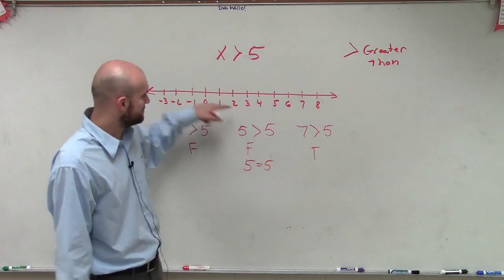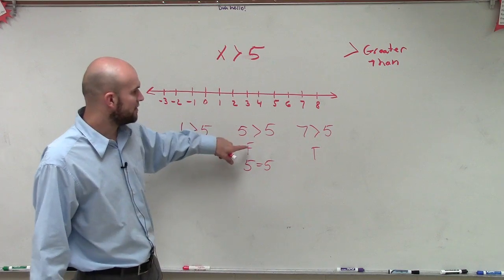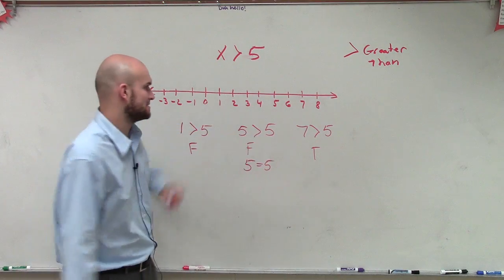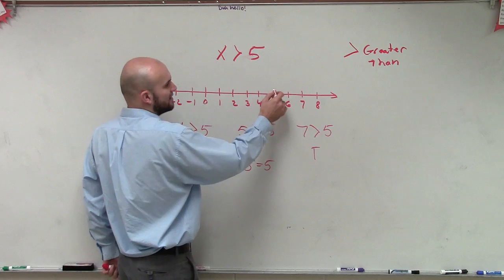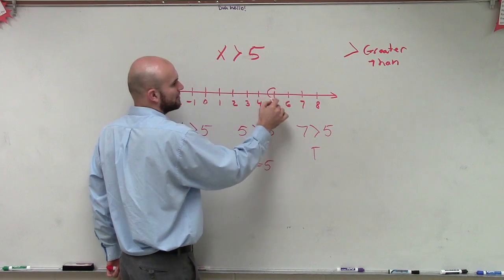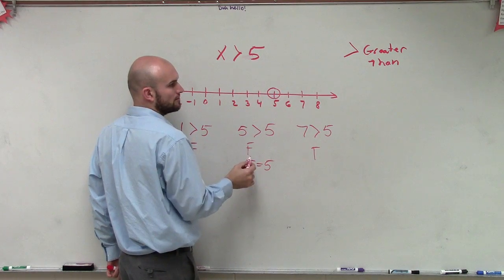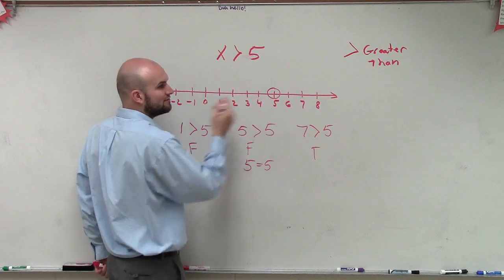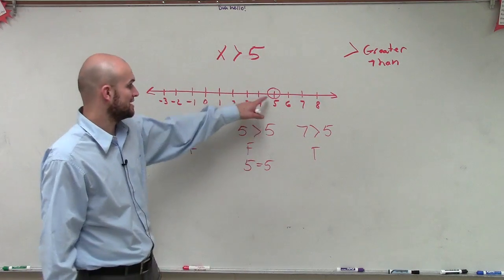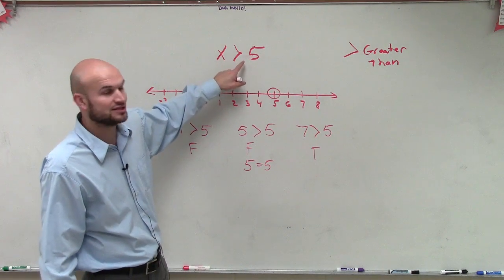So what we have is when we have a false statement and then a false statement at the point, but then a true statement. So since it's false at 5, we're still going to start at 5, but what we're going to have is what we'll call an open circle. Because at the point 5, that is not a part of our answer. 5 does not make this true.